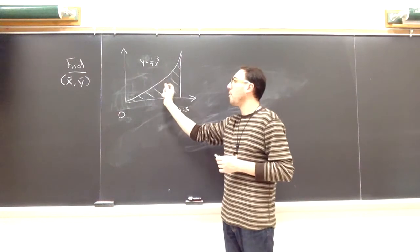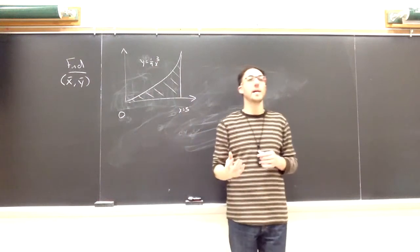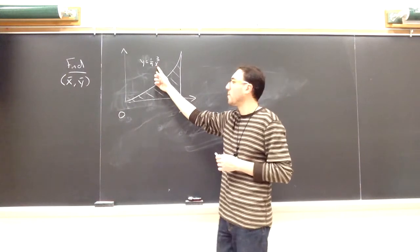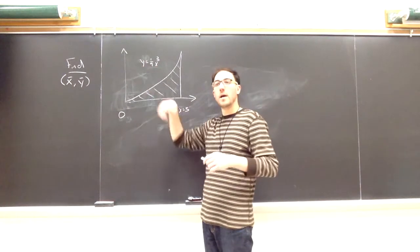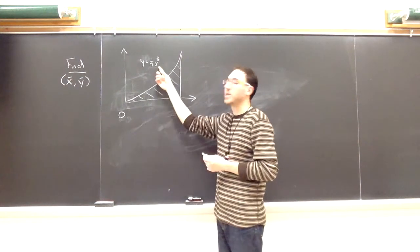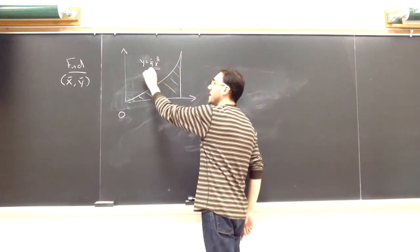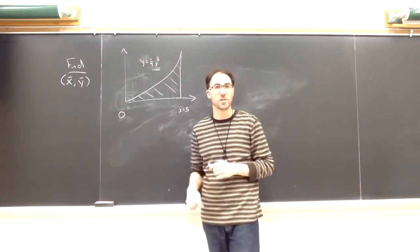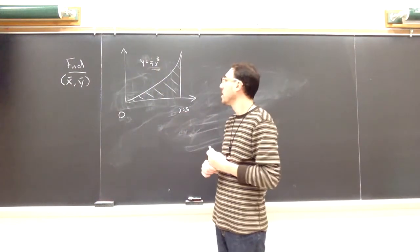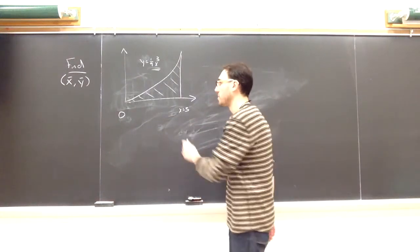At some point we're going to have either y isolated or x isolated. The way this is given to us, y is already isolated here. So we would rather express y in terms of x because otherwise we're going to have a cube root of y and to integrate that, it's not really too difficult, but this is much easier to integrate a polynomial than a radical. So this clues me in that I would rather have everything expressed in terms of x, which means I would prefer to make vertical strips to solve this problem.